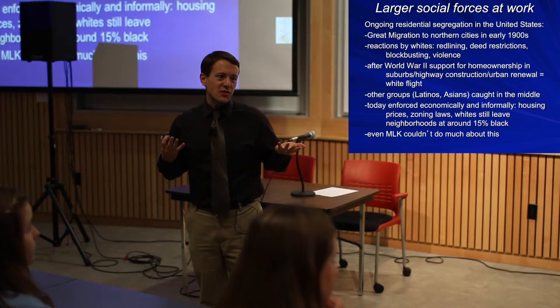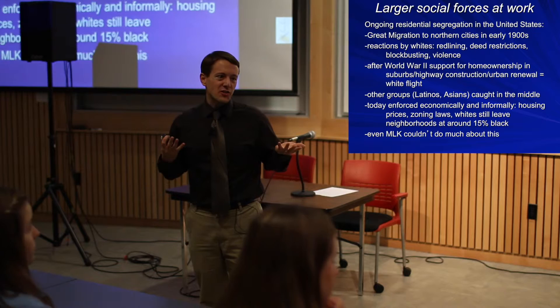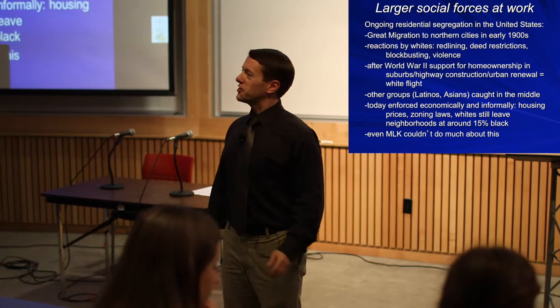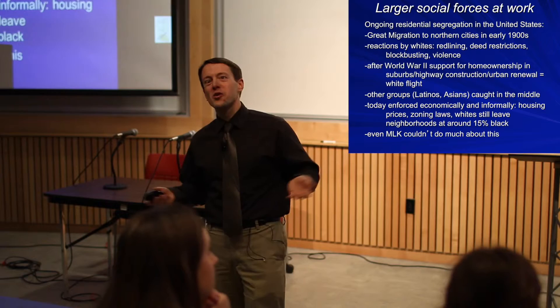The story usually begins in the late 1800s and early 1900s. The Civil War ended, black slaves were freed in the South, but in the early 1900s you get a flood of largely Southern black residents moving to the North. Jim Crow laws were being instituted in the South, there weren't many opportunities there, and they were moving to Northern cities like Chicago, Detroit, Philadelphia, Baltimore, and New York looking for jobs.